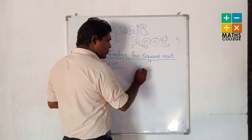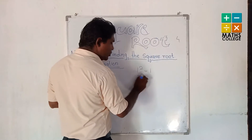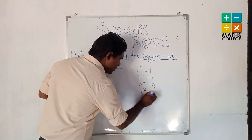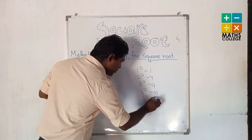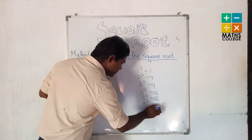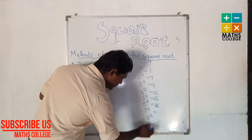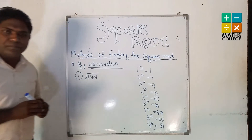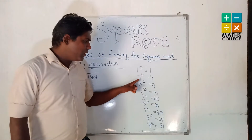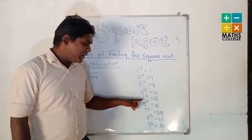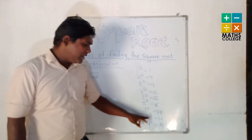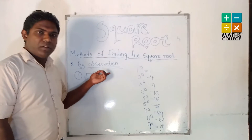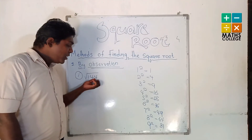The perfect squares are: 1² = 1, 2² = 4, 3² = 9, 4² = 16, 5² = 25, 6² = 36, 7² = 49, 8² = 64, 9² = 81. My dear students, by using observation we have to observe the unit place digit of the number.